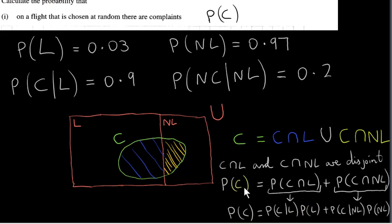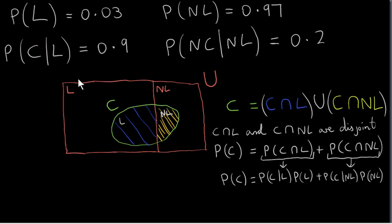Going back to our example, set C is partitioned into two sets L and NL. So we get the probability of C given L, multiplied by the probability of L, and add on to that the probability of C given NL, multiplied by the probability of NL. We have the probability of C given L is 0.9, and the probability of L is 0.03. We don't have the probability of C given NL, but we do have the probability of NL, which is 0.97.